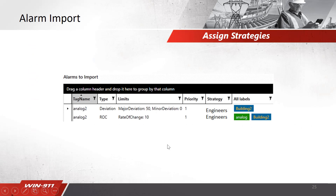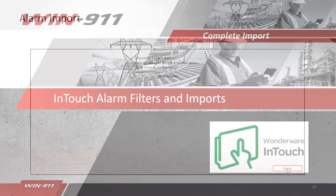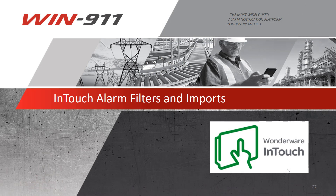Once you have your alarms set, you can assign specific strategies. For example, put these through our engineers and they'll go to a specific call-out. Click Next and it'll go through the alarm import — the time it takes depends on how many tags you have. Click Finish, and inside of WIN911 you can review the Tags tab to see all your alarms and the strategy they went to. That's all for our InTouch Alarm Filters and Imports video. Thank you for watching.